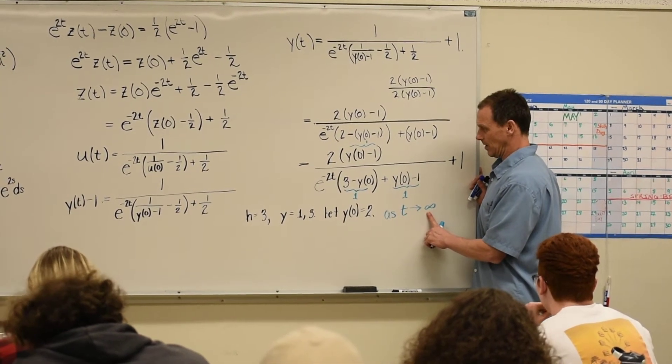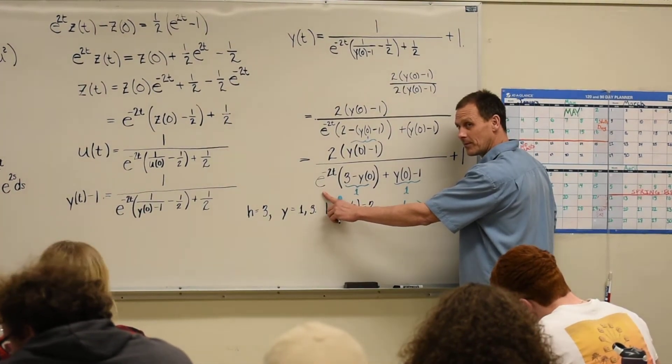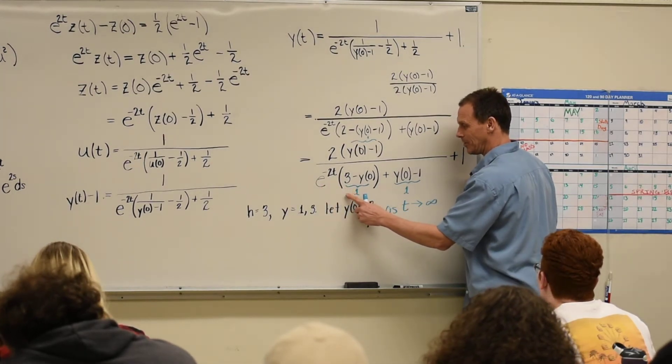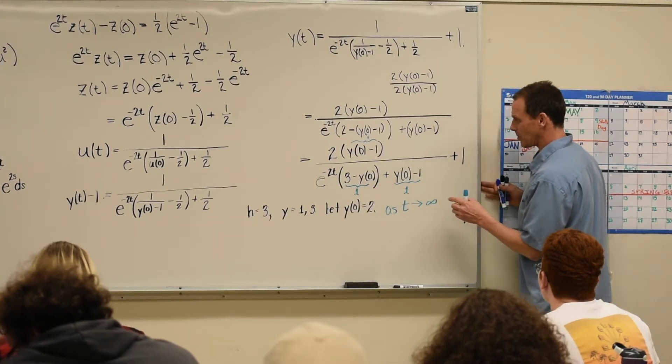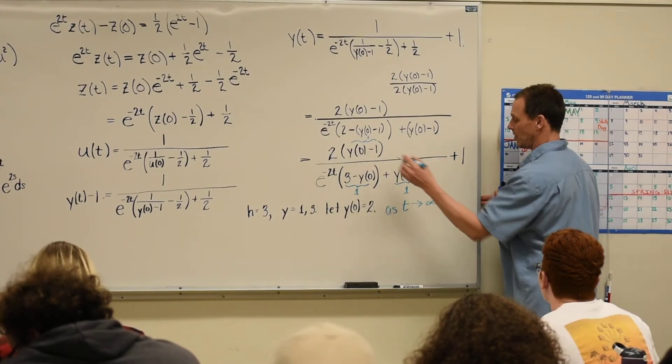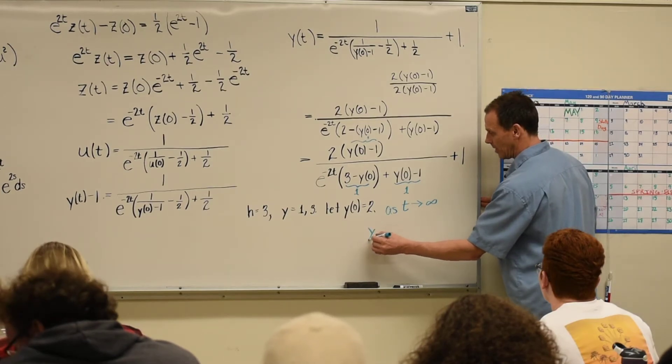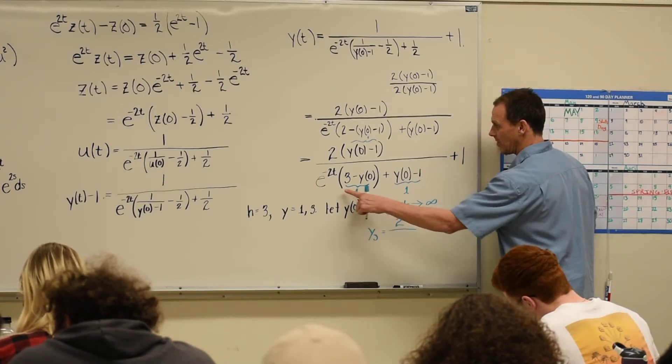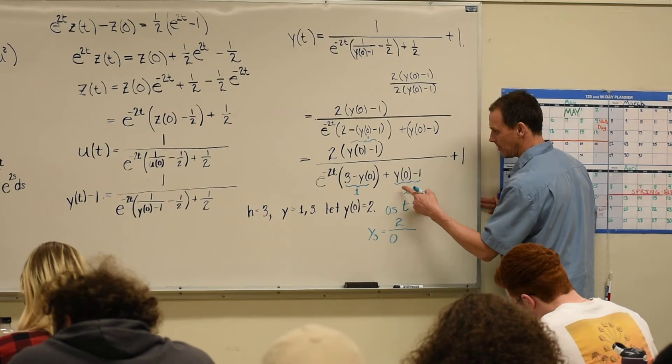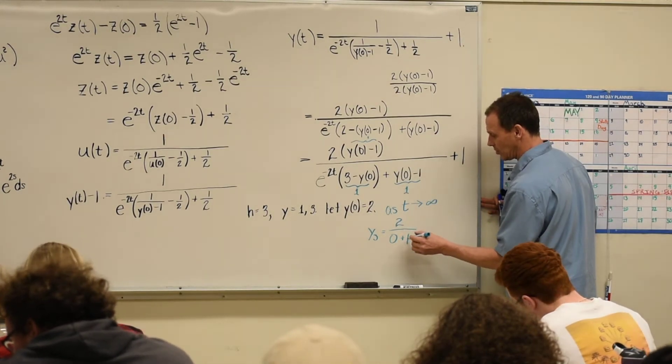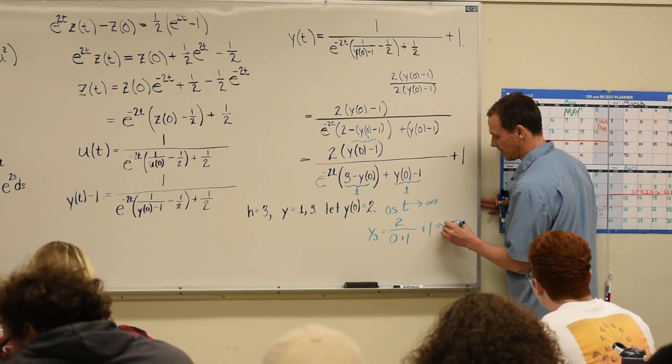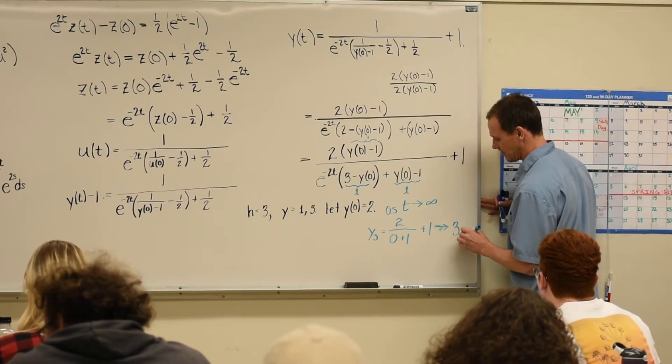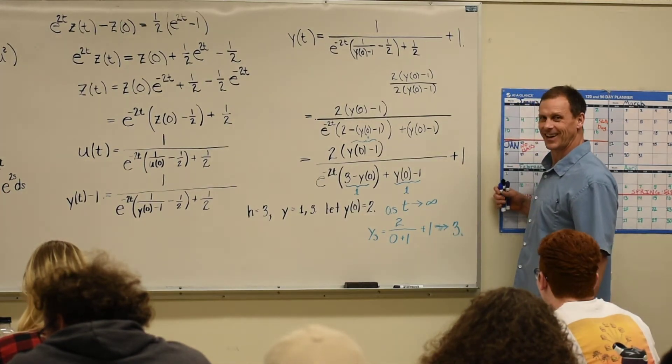So, as T goes to infinity, what happens to this term? This term becomes 0. So, 0 times 0. So, in our denominator, what we're left with is we're left with, or our whole number becomes, let's see, y is steady. It can become a 2 over. This whole piece becomes a 0. This piece is already a 1. That's 2 over 1. If you add one more to it, you get 3. Look at that. So, it does. It goes.